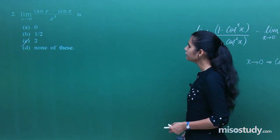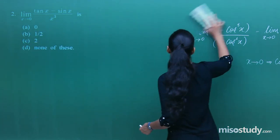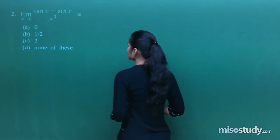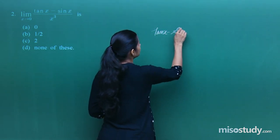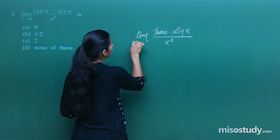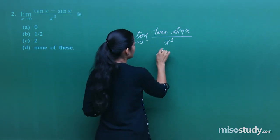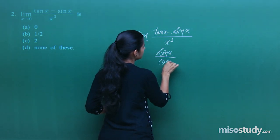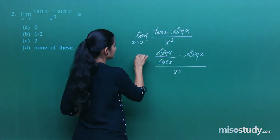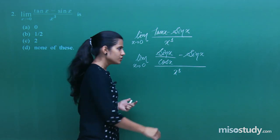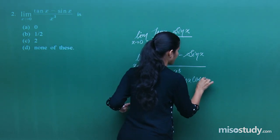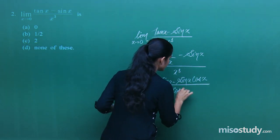Moving on to the next question: limit x tends to 0 of (tanx minus sinx) whole upon x³. We try to simplify tanx minus sinx by writing tanx as sinx/cosx, giving us (sinx/cosx minus sinx) / x³.